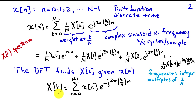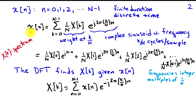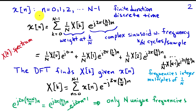The DFT is: X of k equals the sum from n equals 0 to capital N minus 1 of x of n times e to the minus j 2 pi k over N times lowercase n. These two relationships — one expressing X of k as a function of x of n, and the other expressing x of n as a function of X of k — form a pair. I can take x of n and find X of k, or given X of k, I can find x of n. There are only capital N sinusoids involved in this representation.